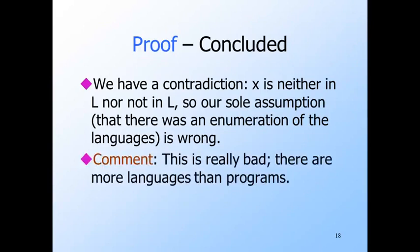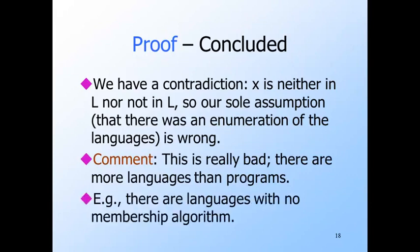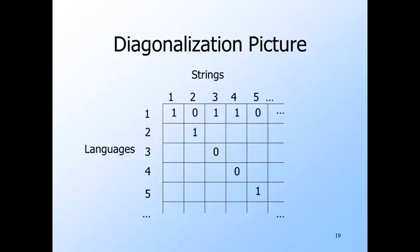As a result, we see that there are more languages than programs, since programs can be enumerated. A particularly bad consequence is that there are languages for which no program can tell whether or not a given string is in the language. On the bright side, none of these strange languages are context-free, since the CYK algorithm gives us a membership testing program for any context-free language. The process of coming up with the language L that can't be in any enumeration is called diagonalization.